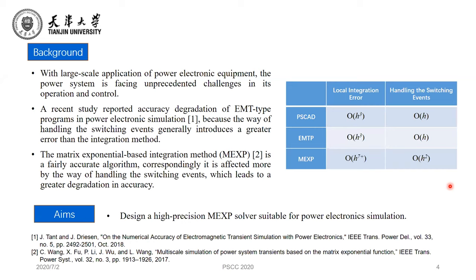With the large-scale application of power electronic equipment, a power system is facing unprecedented challenges in its operation and control. A recent study reported the accuracy degradation of EMT-type programs in power electronics simulation because the way of handling switching events generally introduces a greater error than the integration method. In our previous research, we proposed the matrix exponential method, which is a fairly accurate algorithm. Correspondingly, it is affected more by the way of handling switching events, which leads to greater degradation in accuracy.